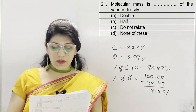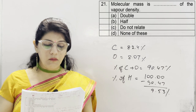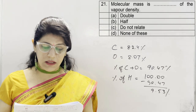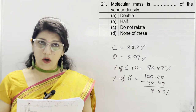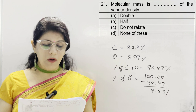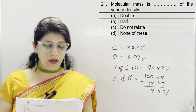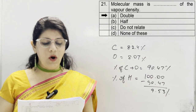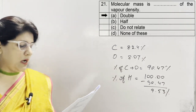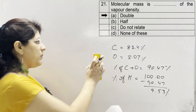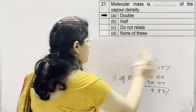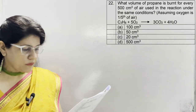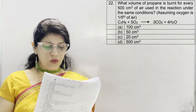In question 21, molecular mass is dash of the vapour density. Options: A double, B half, C do not relate, D none. Option A is correct — molecular mass is double of its vapour density.